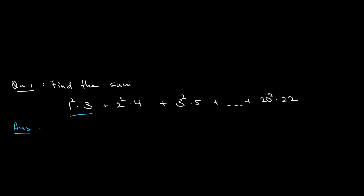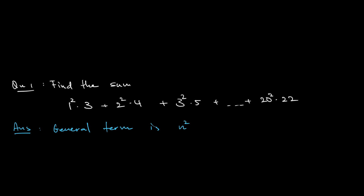First, I need to identify the pattern of each term. There are 20 terms. Notice that each term is something squared multiplied by a second number, which is 2 more than the first number. So here I can write a general term. The general term is n² × (n+2). The first term is when n=1, the second when n=2, the third when n=3, all the way until n=20.